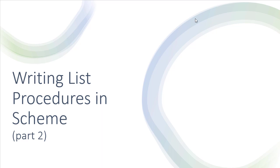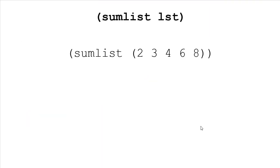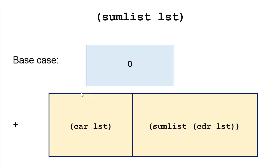Let's see some more examples of writing list procedures in Scheme. The next procedure we're going to write is sum-list, and sum-list takes a list as a parameter and produces the sum of that list. The structure of this particular function will be similar to what we've seen previously.